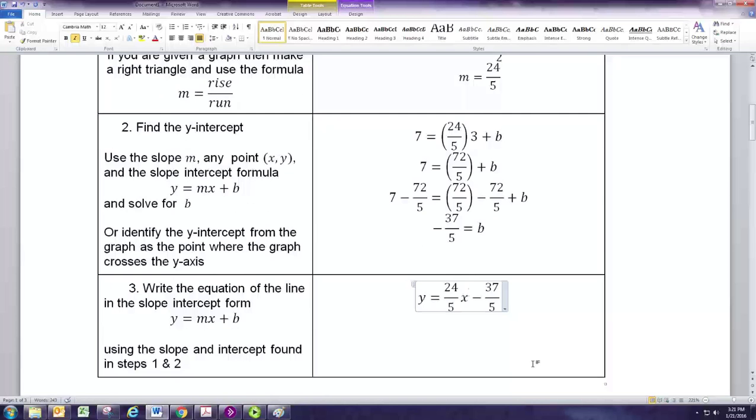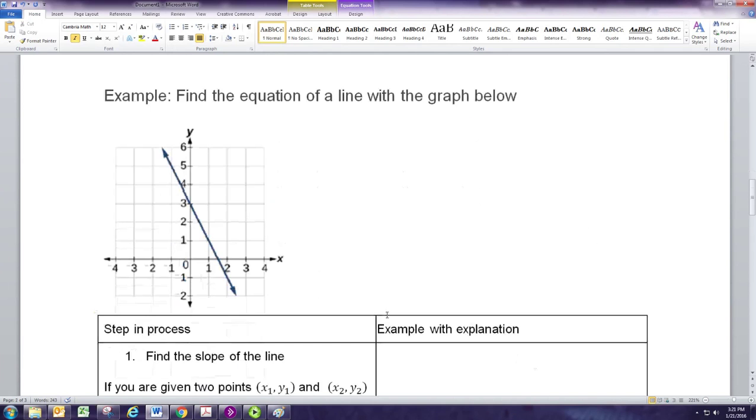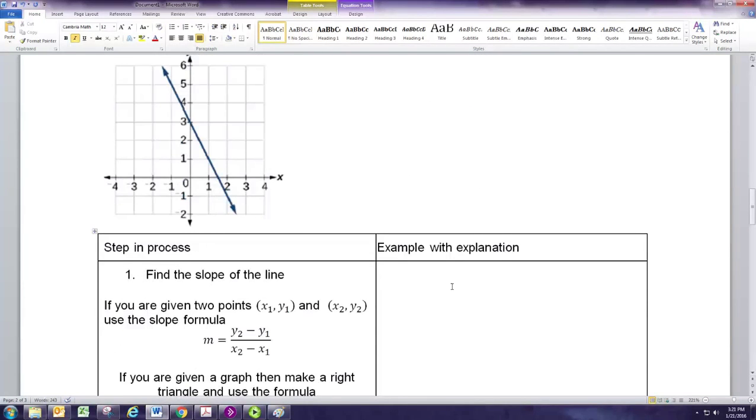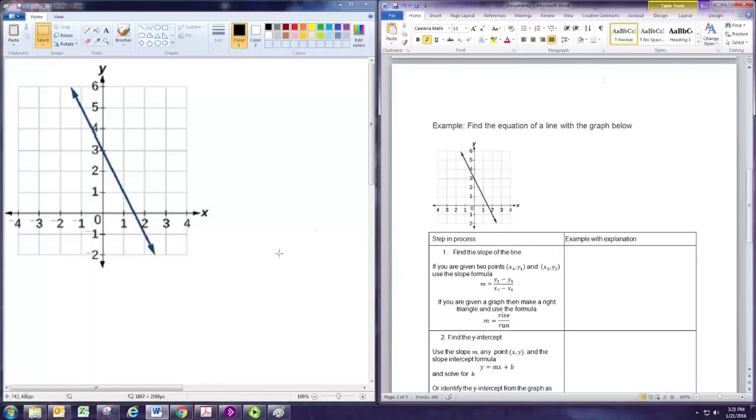Now one of the other situations you might have is that you're actually given the graph, and from the graph you want to find the equation. So given this graph, let's find the equation of the line. Again, we still want to find the slope, and you can pull off two points and use the formula. But it's nice to use a right triangle connecting two points.